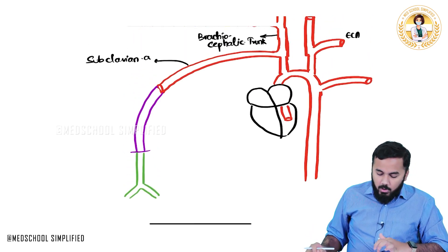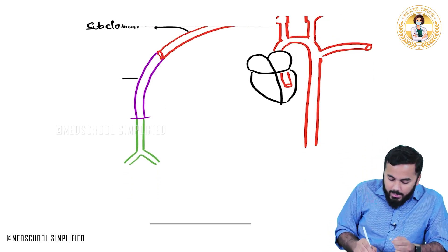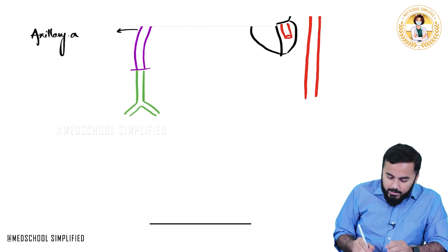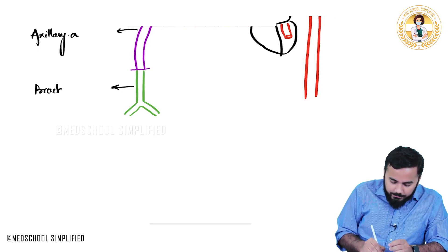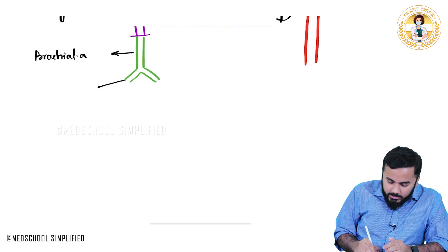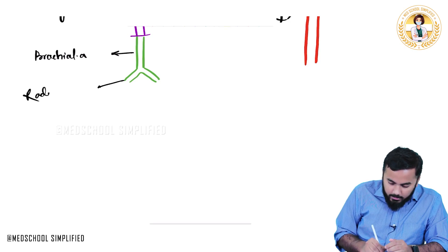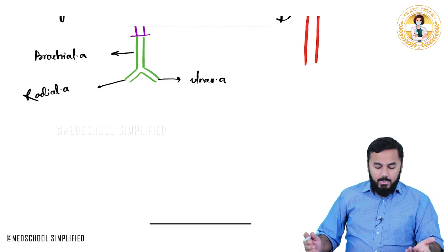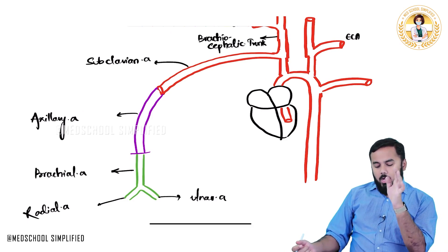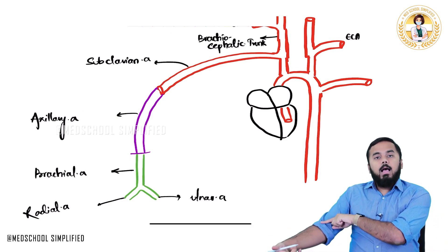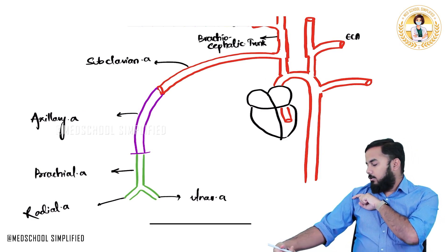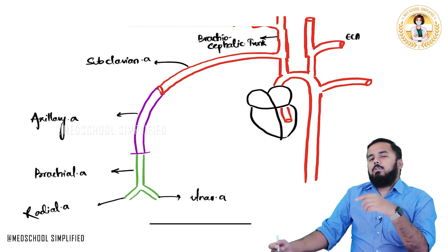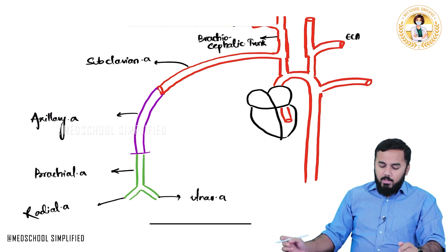The brachial artery gives out two branches: one is called the radial artery and another is called the ulnar artery. So this is just an overview of the arterial supply to your upper limb — subclavian artery continues as axillary artery, then brachial artery, which divides into radial and ulnar artery.